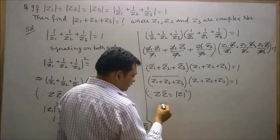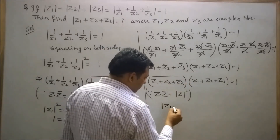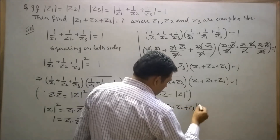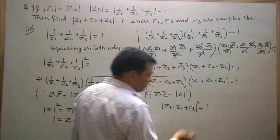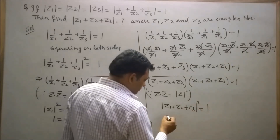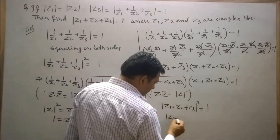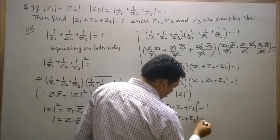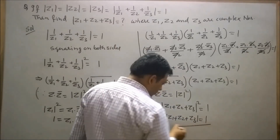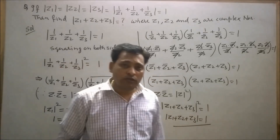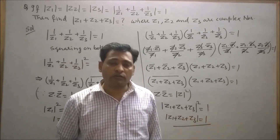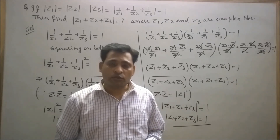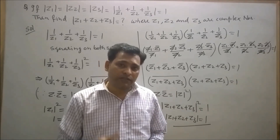So modulus of (z1+z2+z3) squared equals 1. Taking the square root on both sides, the modulus of z1+z2+z3 equals 1. Hence the required value is 1. In today's lecture I have solved a good question on the basis of some properties related to complex numbers. Keep watching my videos and keep practicing. Thank you, take care.